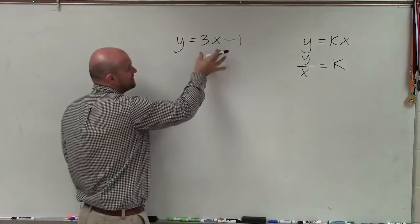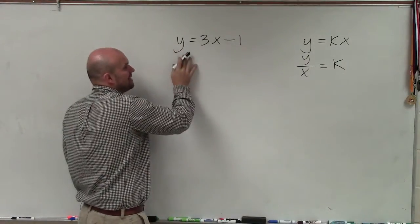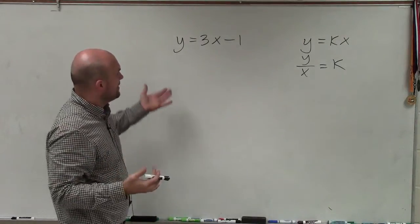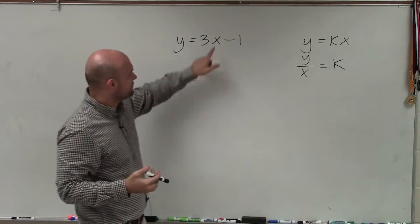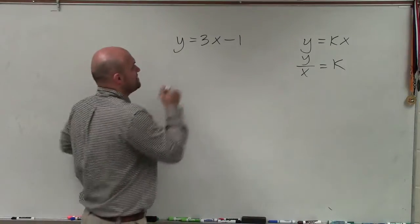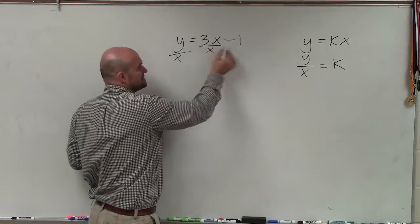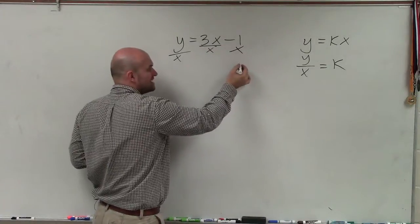So it is literally impossible for us to be able to rewrite this as y over x is equal to a value. Because for me to solve for x, I would have to divide by x over here. But if I divide by x here, whenever you divide by x on this side, you've got to make sure you divide on both sides.